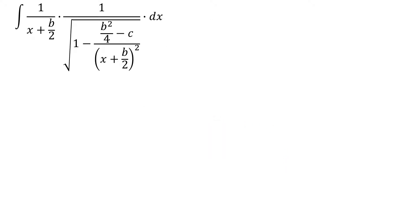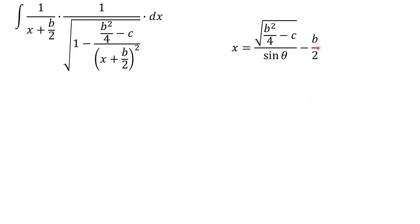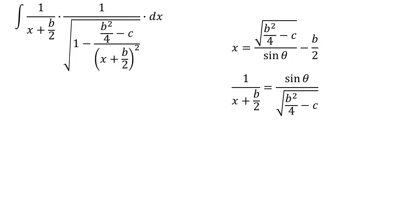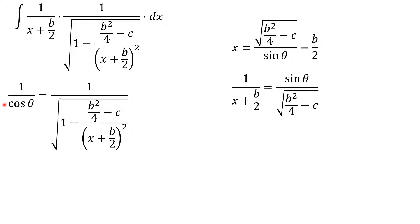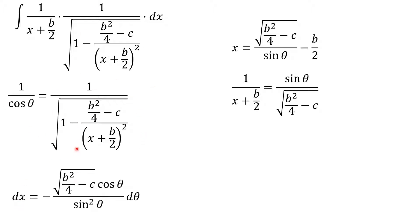So now we're ready to employ our trig substitution. We've found the cosine term and dx in terms of theta, but we also need one over x plus b over 2. From earlier, if we add b over 2 to each side and then take one over each side, we get that one over x plus b over 2 equals sine theta over the square root of b squared over 4 minus c. That's just more algebraic manipulation with variables. So now we can apply our trig substitution to all three terms.